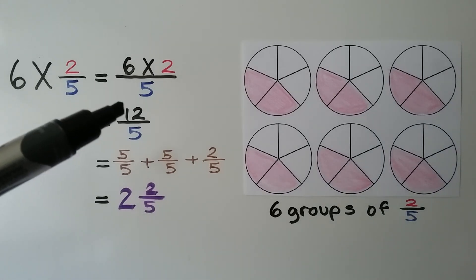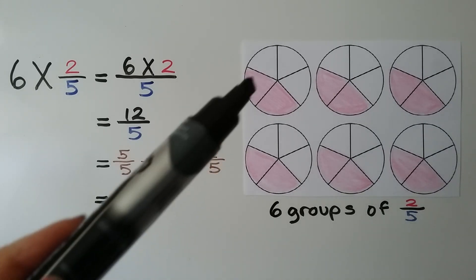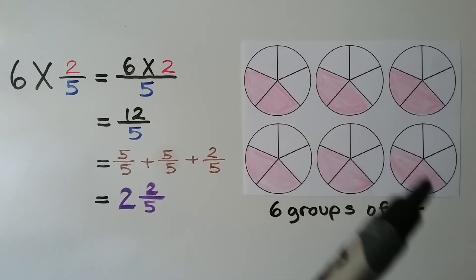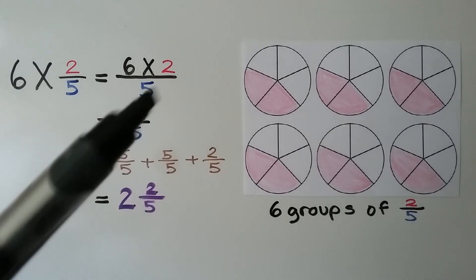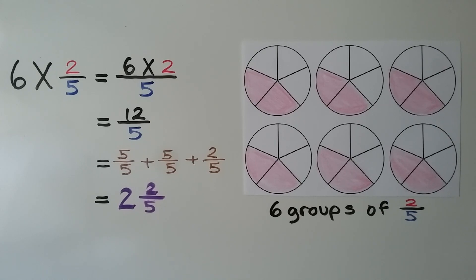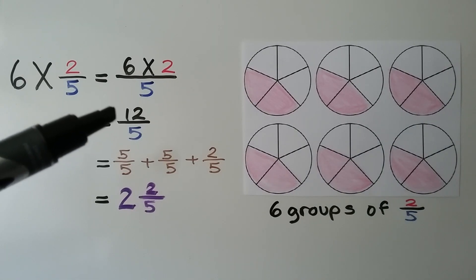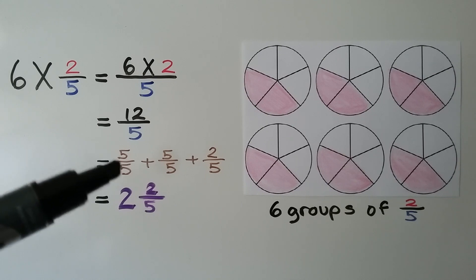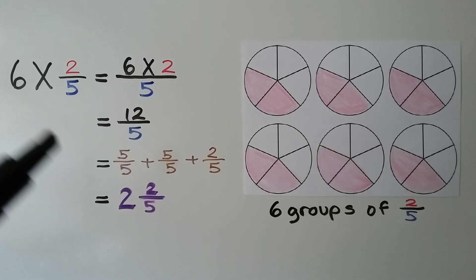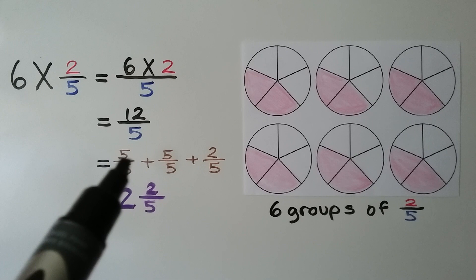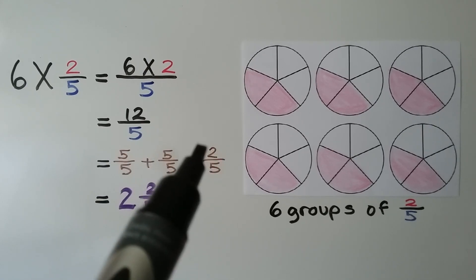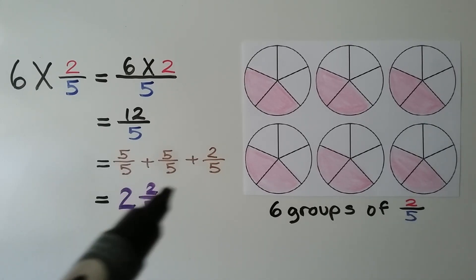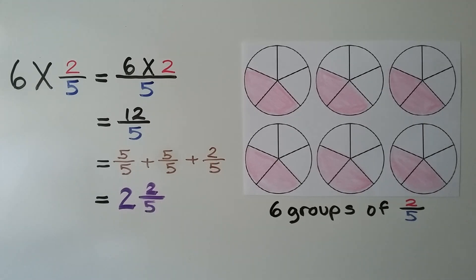Six times 2 is 12, we have 12 fifths. We count 2, 4, 6, 8, 10, 12 that are shaded. It's split into fifths, we have 12 fifths. We can rename 12 fifths as 5 fifths plus 5 fifths plus 2 fifths. 5 plus 5 plus 2 is equal to 12. We have 1 whole, another 1 whole, and 2 fifths. We have 2 and 2 fifths. We have 6 groups of 2 fifths, it's equal to 2 and 2 fifths.